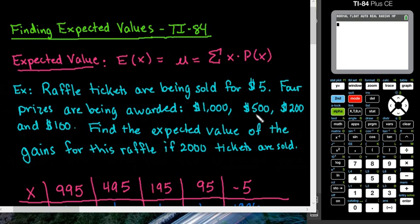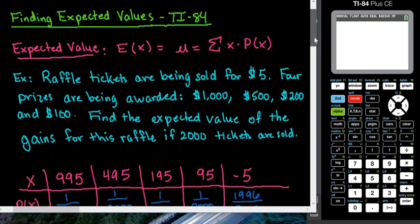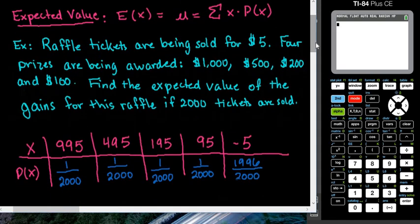The largest is a $1,000 prize, $500, $200, and $100. What we are going to do is calculate the expected value of the gains for this particular raffle if 2,000 tickets are sold.